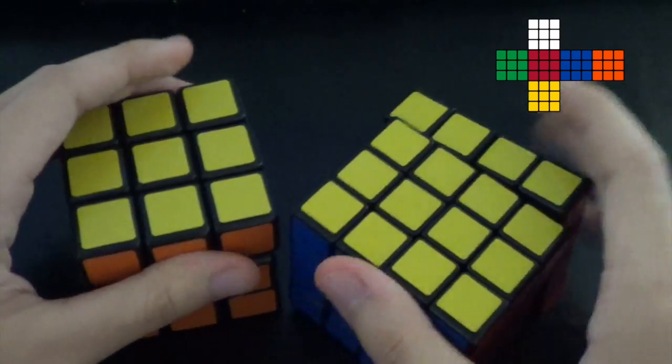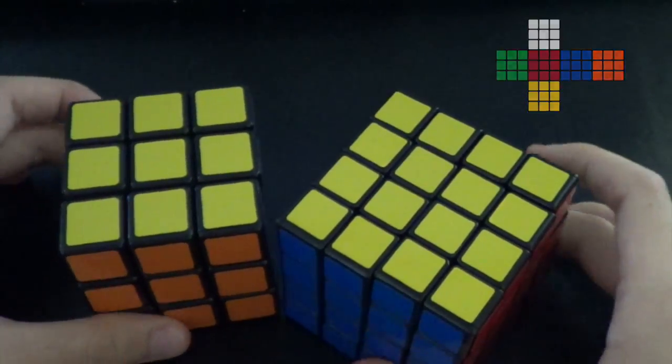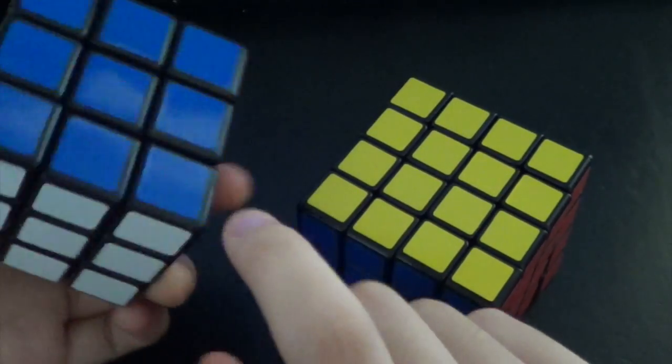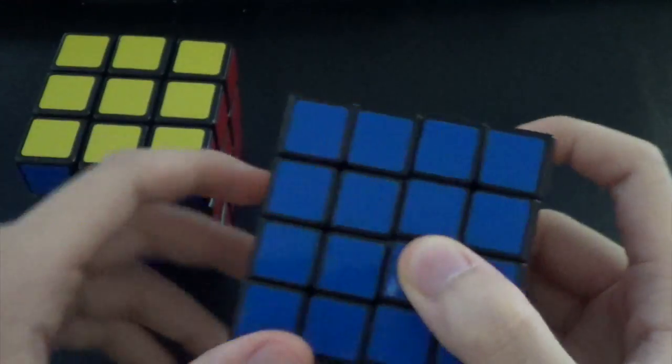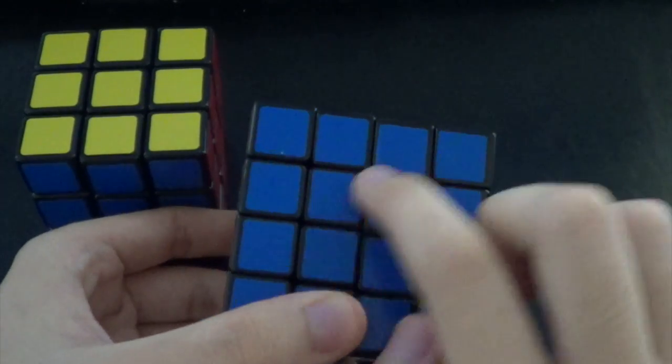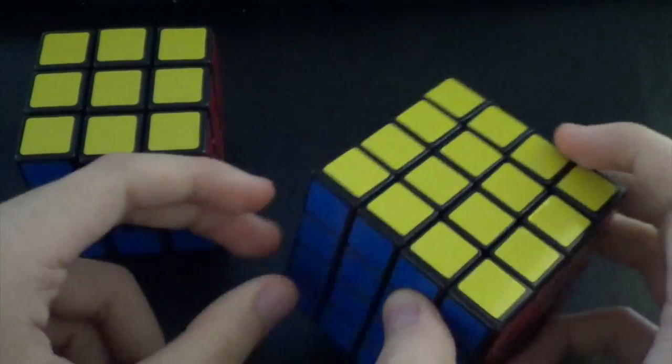And so the color scheme should be the same as the 3x3, except that the centers on the 3x3 always stayed the same. But you're going to have to be solving the centers on the 4x4.